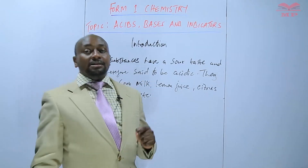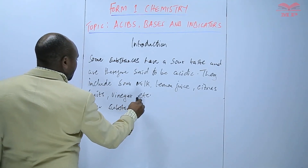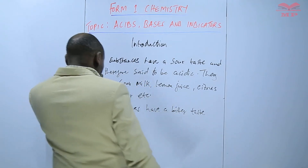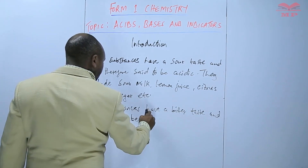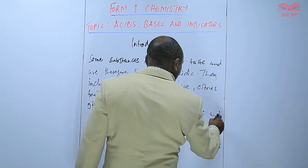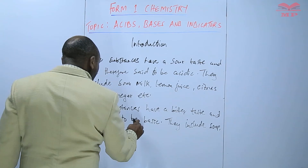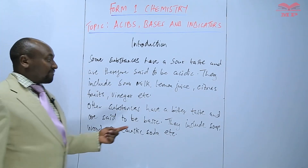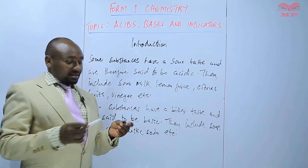We also have other substances that have a bitter taste. These are said to be basic. Examples include soap, wood ash, and caustic soda. So, substances with a bitter taste are basic, while those with a sour taste are acidic.